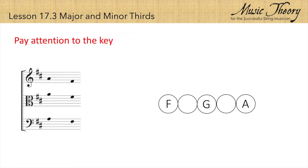It's important to pay attention to the key signature because that can affect the interval. This musical example has a key signature with two sharps. And the F sharp in the key signature is going to affect the F on the staff by raising it a half step.